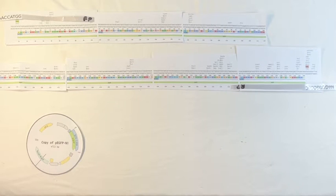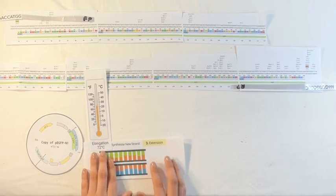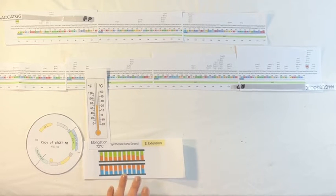In order to do that, we're going to increase the temperature to about 72 degrees Celsius. This step is known as elongation.